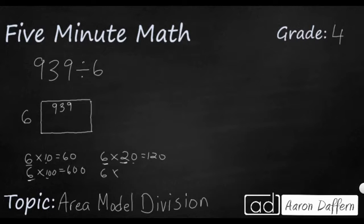So 6 times 200 is going to be, well, 6 times 2 is 12, and you add your 2 zeros after that, 1200. So we're going to need this because we're going to try to figure out 6 times what is going to get as close to 939. And if we don't get close, that's perfectly fine. We can add additional boxes off to the side.